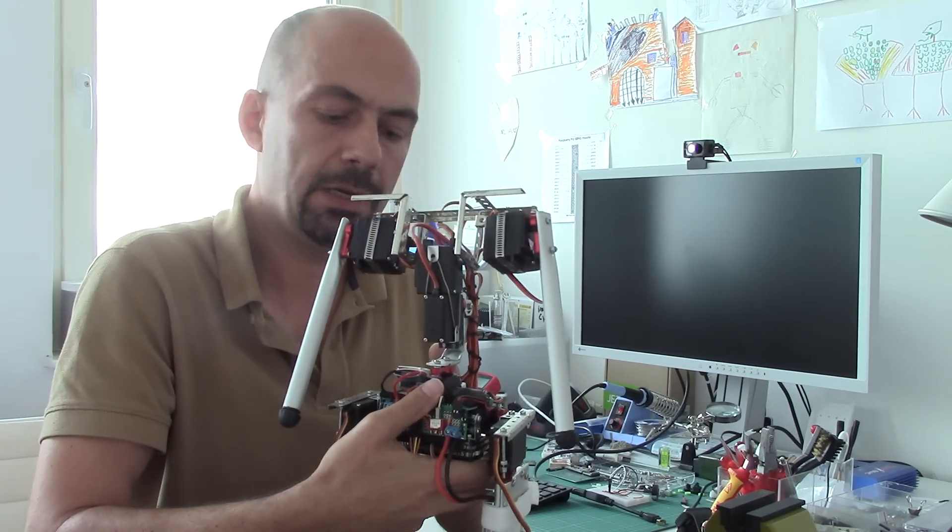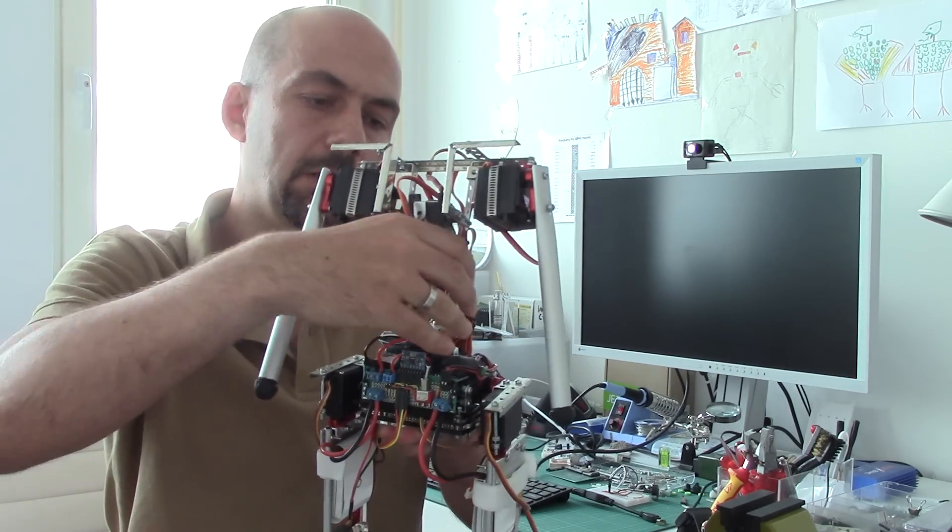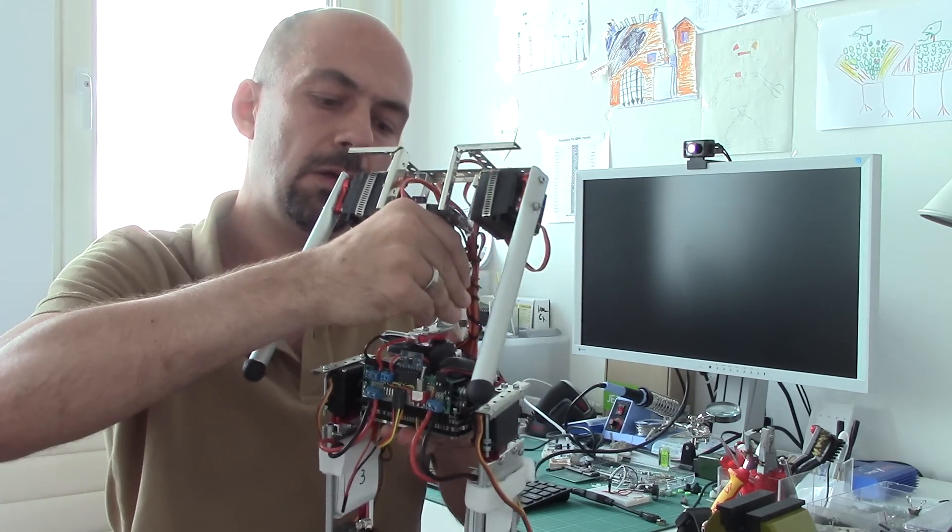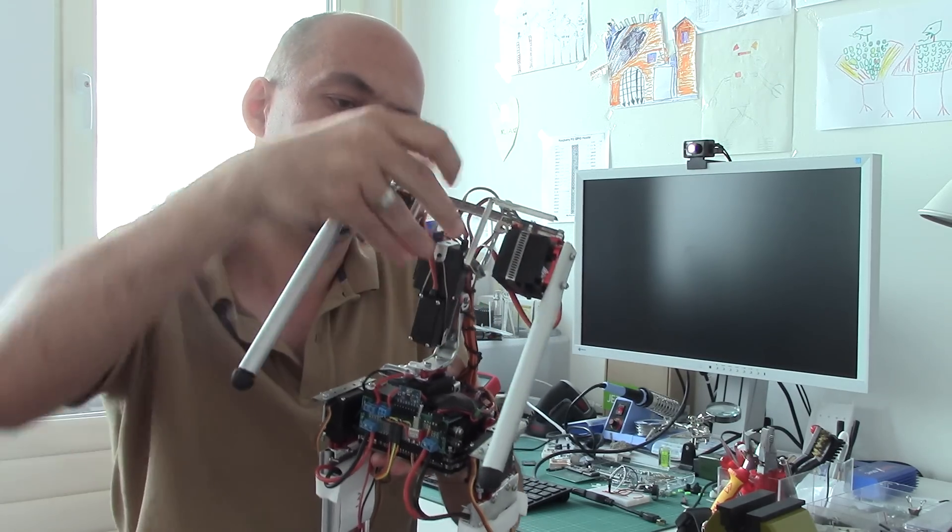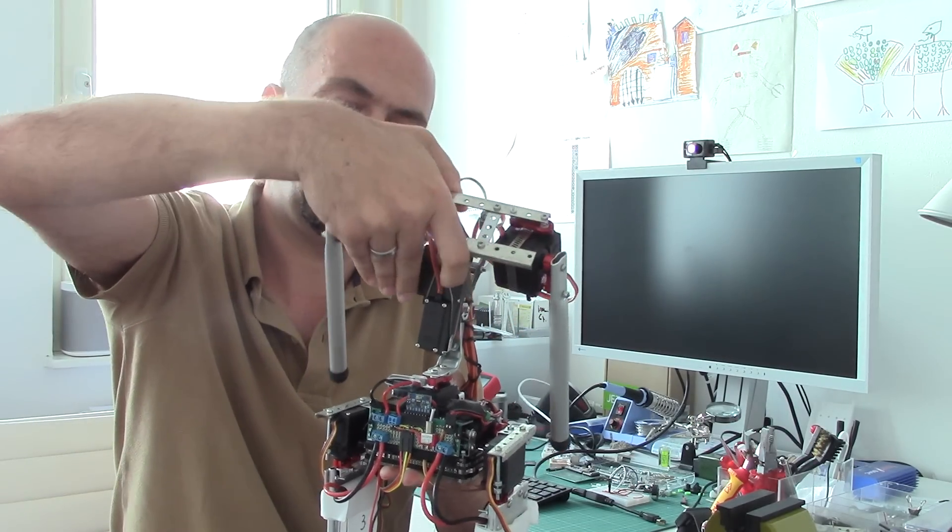So the spine is actually able to turn the robot now in this direction as well as this direction and one for bowing.